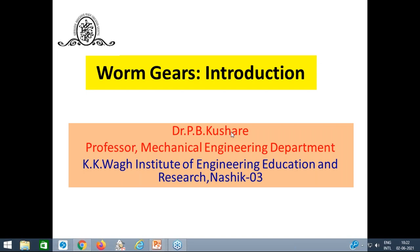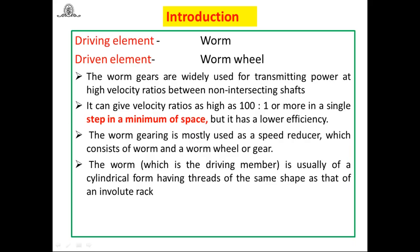Last session we started unit four: design of worm gears. Worm and worm gear are used to transmit power at 90-degree non-intersecting, non-parallel shafts. The worm is a screw-like driving element having threads on it, while the driven member is the worm wheel, which has a construction similar to a helical gear.